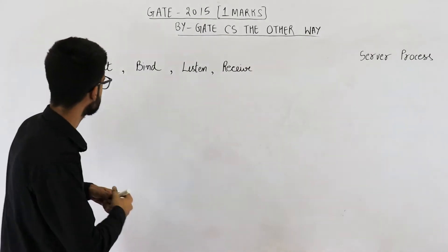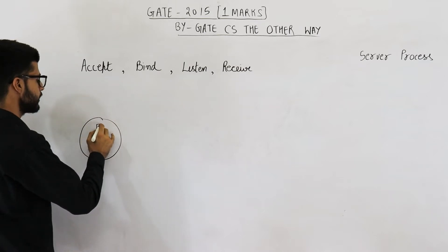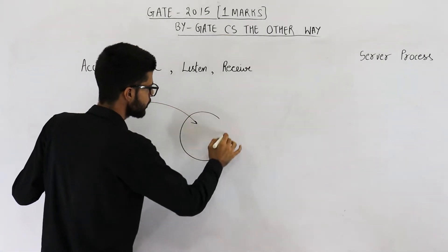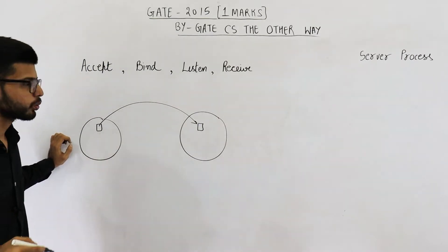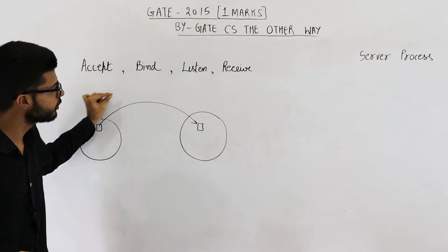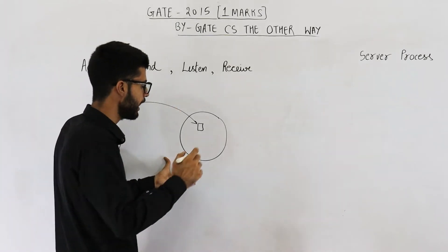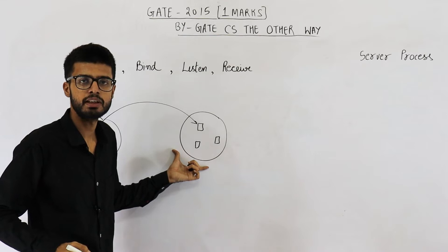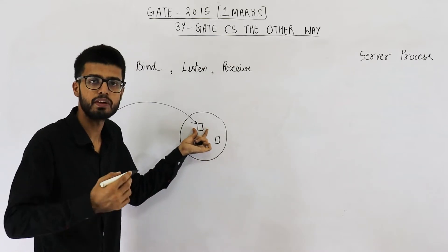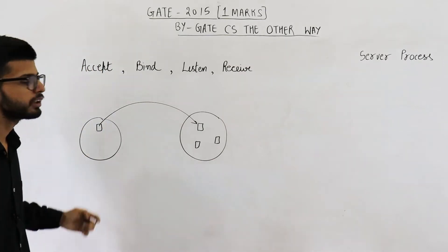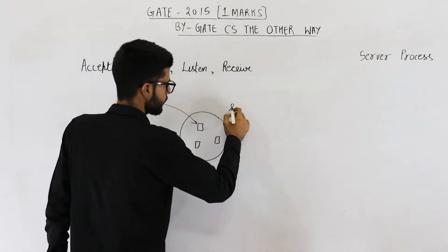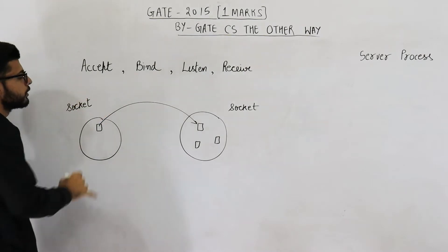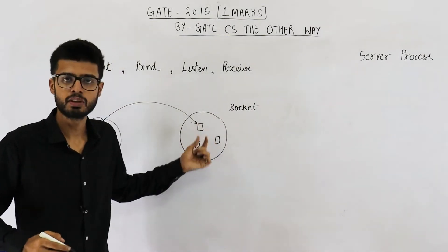Suppose this is your machine and there is some process in this machine that wants to communicate with some other process in some other machine. To facilitate this communication, first of all you need to identify a machine uniquely in the entire world, and within that machine there can be many processes. So after identifying the machine uniquely, you want to identify a process within that machine uniquely. For this communication, we need sockets. There will be a socket in each machine, and sockets can be used to identify a process uniquely in the entire world.